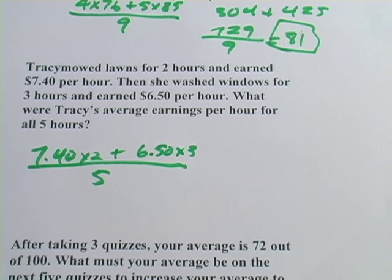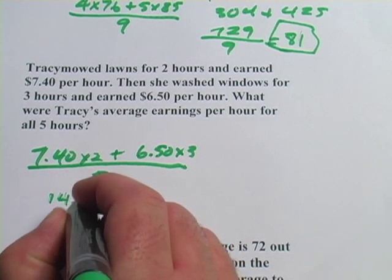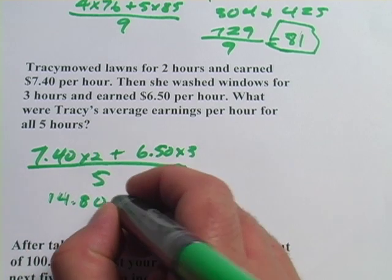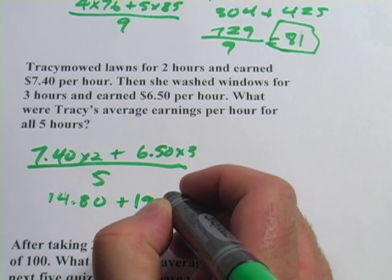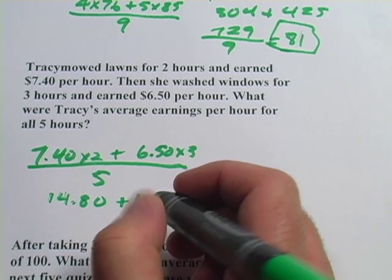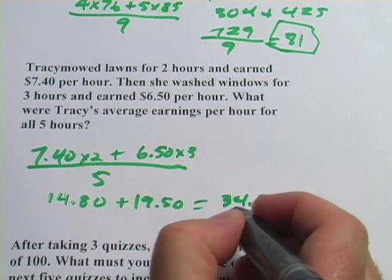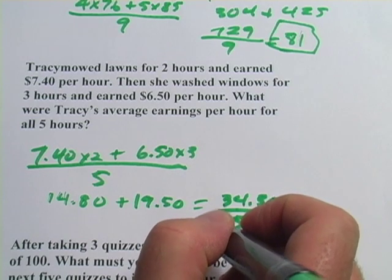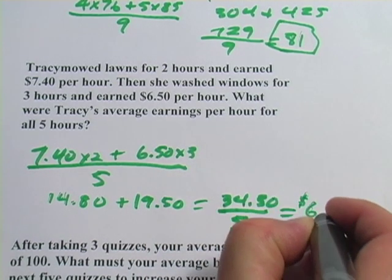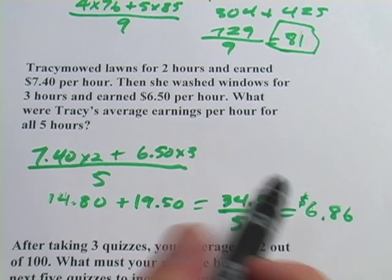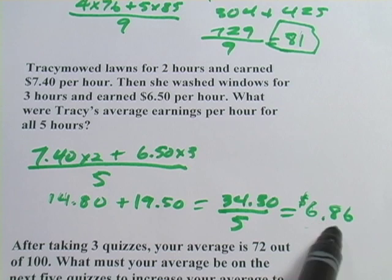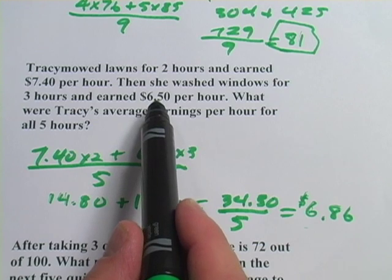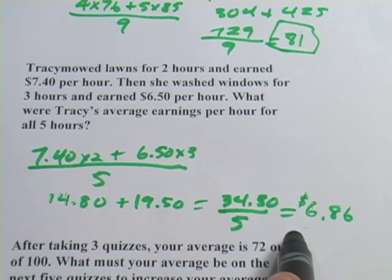7.40 times 2 is 14.80. 6.50 times 3 is 19.50. Add those together and I get 34.30 — but we've got to put that all over 5. We divide that by 5 and we get $6.86. Let's go back and check that the number makes sense. This is an average, so it should be somewhere in the middle of the high and low values. 7.40 was our high value, 6.50 was our low value. 6.86 is somewhere in the middle. That works out.